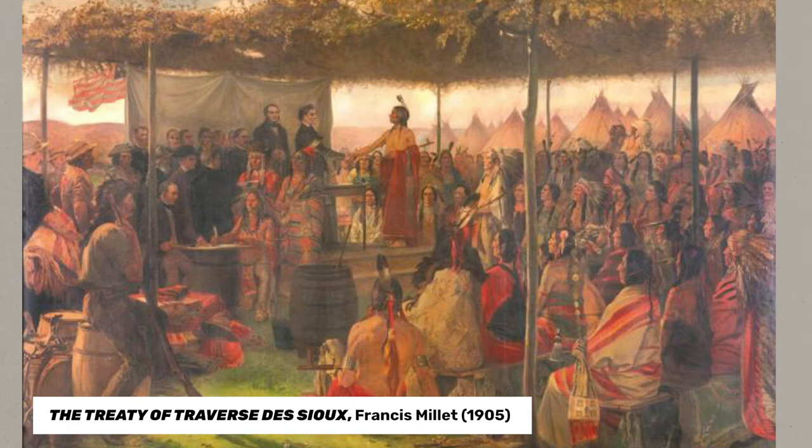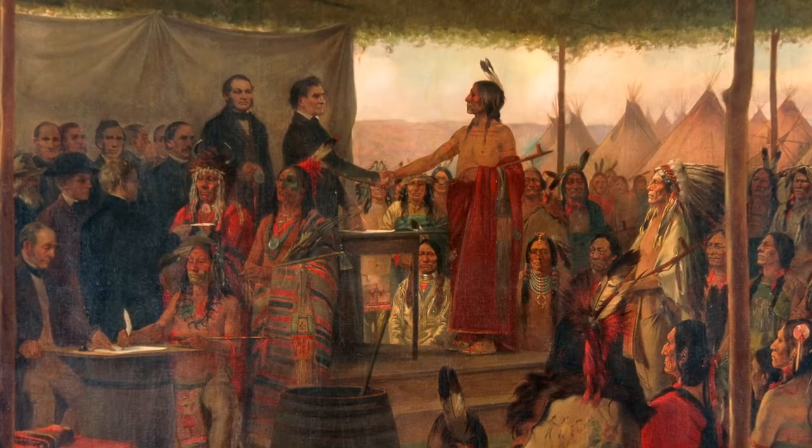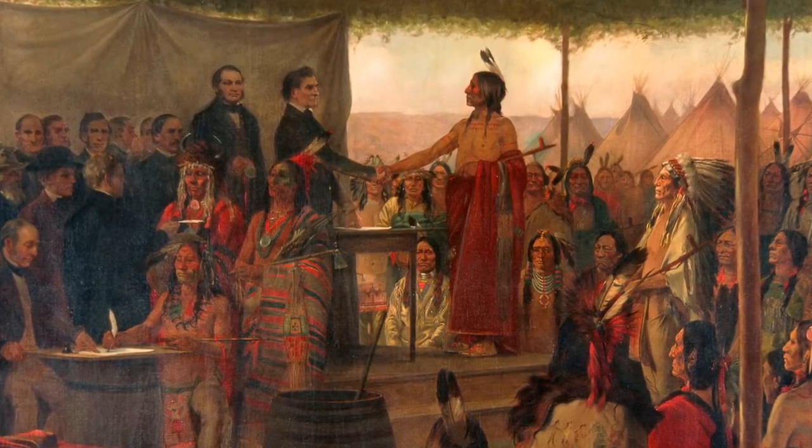The idea that there were two equal parties negotiating a fair deal is a historical fiction that was enabled and bolstered by works of art like this. The treaty painting shows a romantic portrayal of a dignified land exchange and sugarcoats a lot of this story, completely excluding the understanding that this was a horrible time for Native people. At this point in the 1850s, Dakota people had almost no options — it was like this treaty or get nothing. Once you have limited options, it really can't be called a cession; it's really more of a seizure, and so I often call them land seizure treaties.